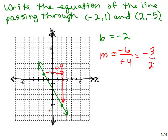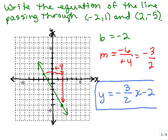So by visually graphing those two points, it looks like the equation of the line is y equals negative 3 halves x minus 2. If you're extremely accurate and you'd prefer to get out graph paper and figure out the equation that way, you can do that.